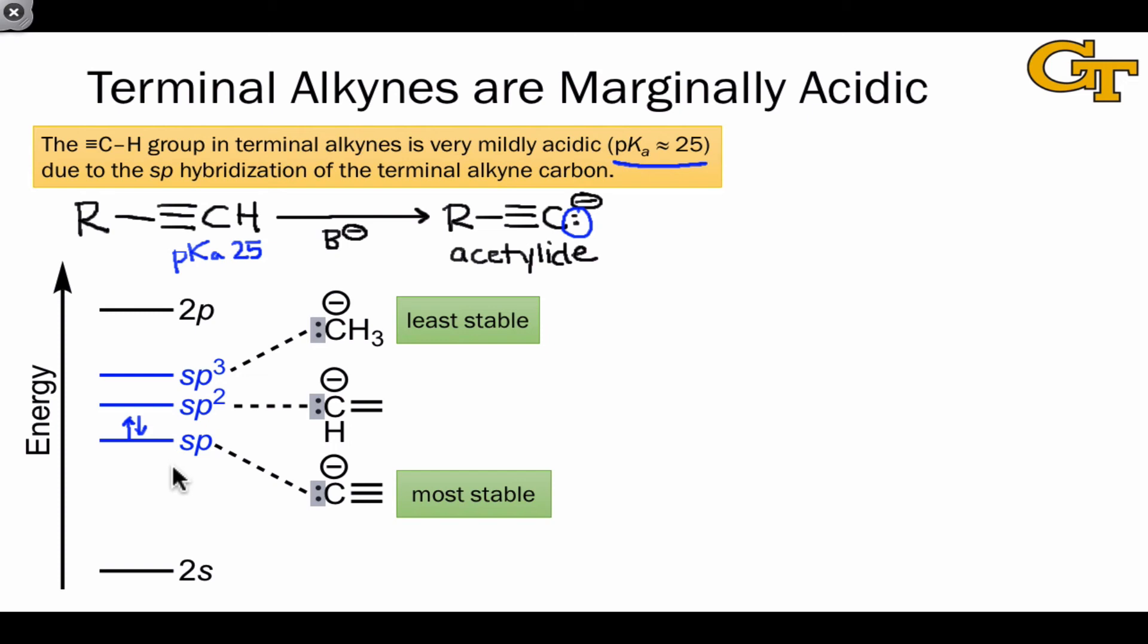This is what makes terminal alkynes so much more acidic than methyl groups and terminal alkenes, which contain a hanging CH2 group.